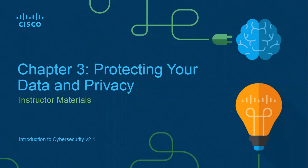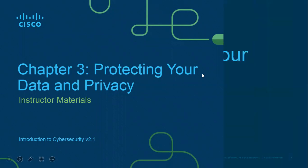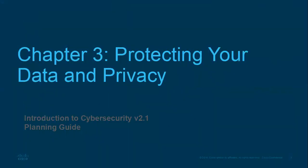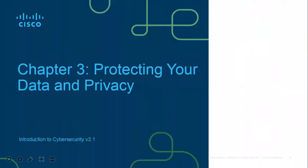We're going to be looking at quite a number of things — module three, chapter three: protecting your data and privacy. In module one, we looked at what makes us vulnerable, our personal data. In module two, we looked at attacks, different types of attacks, and what malware is. In module three, we're going to look at how do we protect our data and how do we ensure privacy.